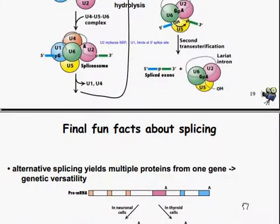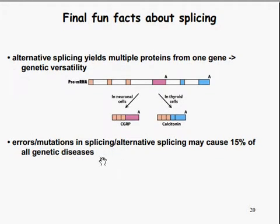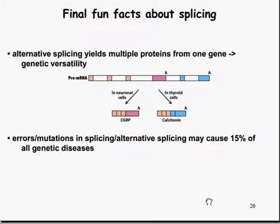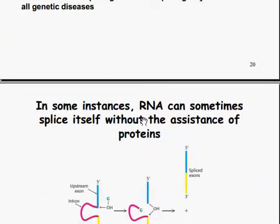Final fun facts about splicing: alternative splicing yields multiple proteins from one gene, which increases genetic versatility. However, errors or mutations in alternative splicing may cause 15% of all genetic disease — it may code in one direction or in an entirely different direction, which in neural cells or thyroid cells can cause genetic disease. Additionally, in some instances, RNA can splice itself without the assistance of proteins — it can happen, though not commonly.